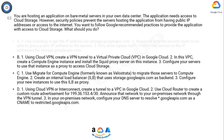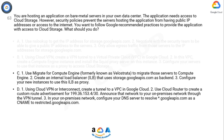Option B: Anytime a question mentions on-premises and cloud, Google wants you to think about Cloud VPN. This solution might even work, but installing Squid is a bad solution to a simpler problem.